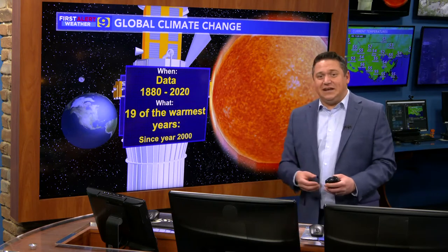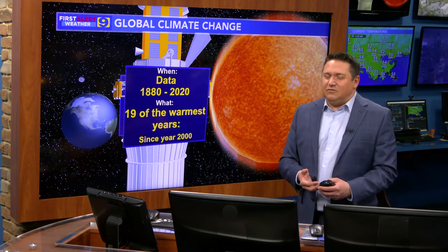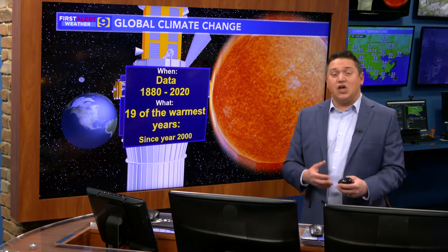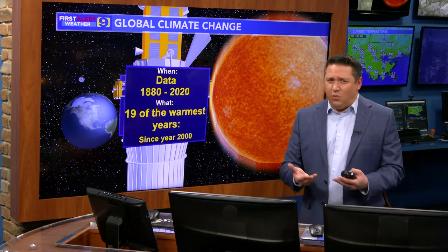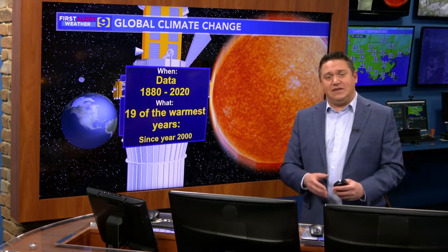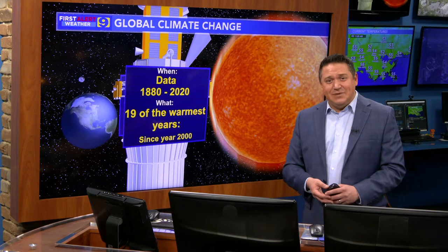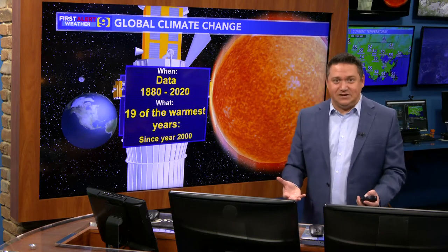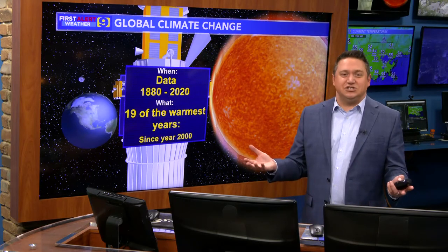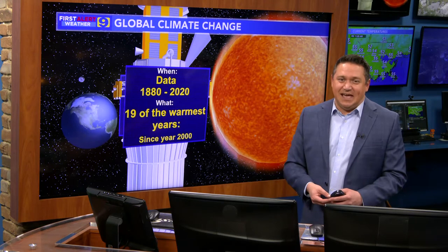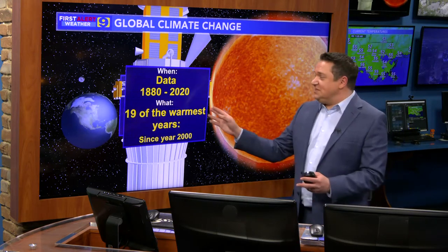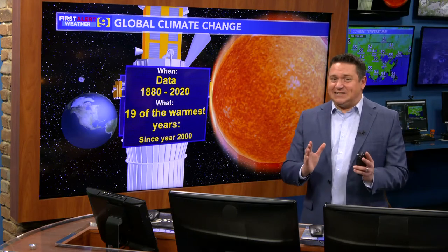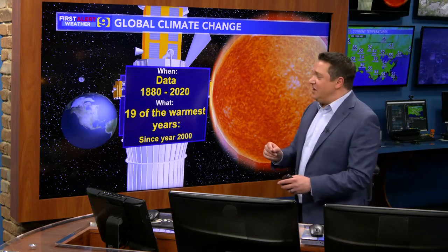We should start by talking about the data. This data is mainly between the years 1880 and 2020 — about a sample size of 140 years, which is significant when you're talking about weather. But when you're talking about the global climate, you could make the argument that it's insignificant because the Earth has been here for billions of years, and mathematically 140 years would be negligible — a blink on the geologic timescale. But the reason why we look at these past 140 years is because we've seen significant changes, not only in that time frame but even in a shorter time frame.